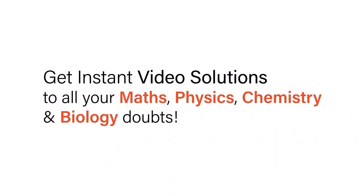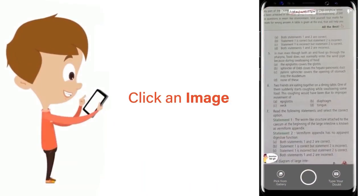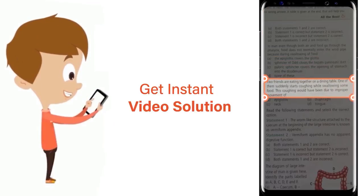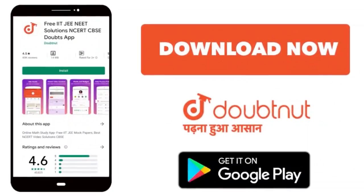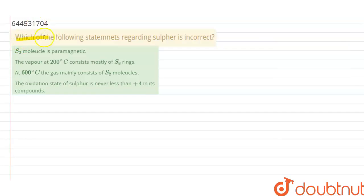With Doubtnet, get instant video solutions to all your math, physics, chemistry, and biology doubts. Just click the image of the question, crop the question, and get instant video solution. Download Doubtnet app today. The question given here is which of the following statements regarding sulfur is incorrect. Let's examine each statement to determine which one is incorrect.